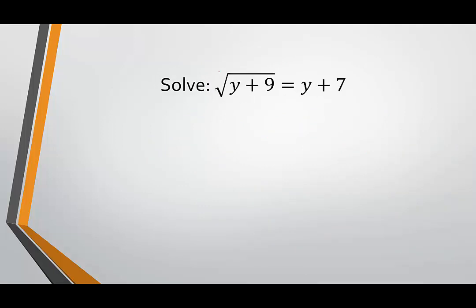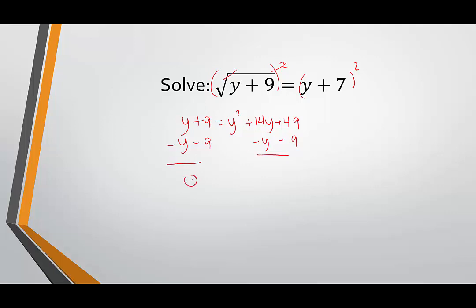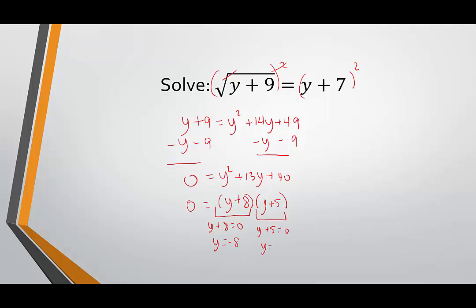In the next example, the radical is by itself, so we can square both sides. The radical and exponent cancel, giving y plus 9 on one side, and the binomial square gives y squared plus 14y plus 49 on the other. We have a quadratic, so we set it equal to 0, getting 0 equals y squared plus 13y plus 40. We're looking for two numbers that multiply to 40 and add to 13: that's 8 and 5, giving us (y plus 8)(y plus 5). Setting each factor equal to 0 gives y equals negative 8 and y equals negative 5. We want to check both.